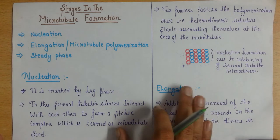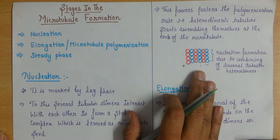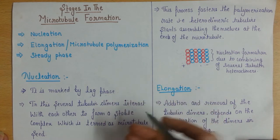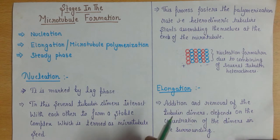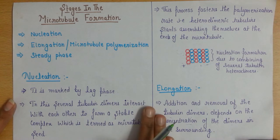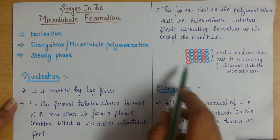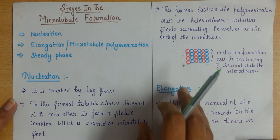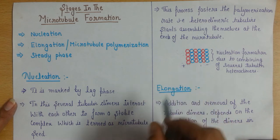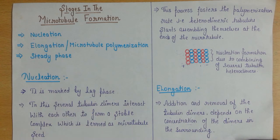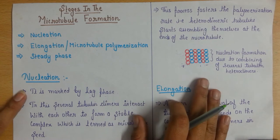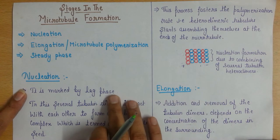To form one microtubule, the first requirement is that a nucleation phase occurs — a nucleus is generated — so that the polymerization rate in the microtubule can be carried forward at a faster rate. To speed up that polymerization rate, this nucleation phase is very necessary. To form this nucleus, it requires a certain time period, and this time period is what we call the lag phase.